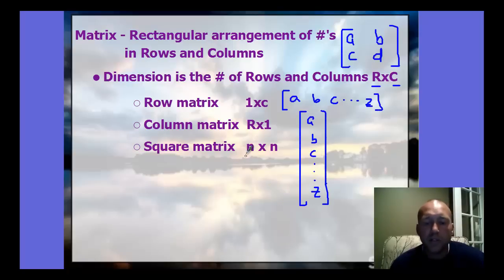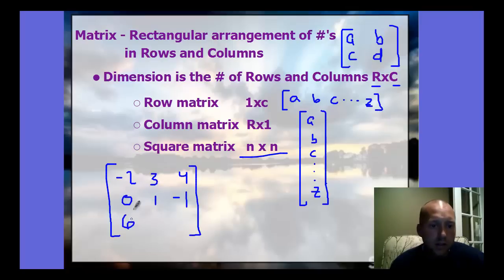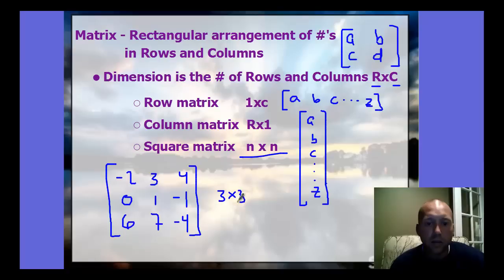A square matrix is an n by n matrix, meaning we have the same number of rows as columns. For example, the matrix with entries negative 2, 3, 4, 0, 1, negative 1, 6, 7, and negative 4 is a square matrix — specifically a 3 by 3, with 3 rows and 3 columns.